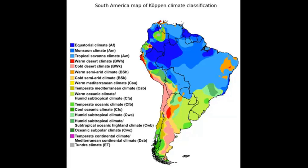Tying everything together, we can look at climate and connect it to the physical features and the physical landform regions we just discussed. So we have climate which is going to go from north to south, and we're going to see there's a lot of variation in terms of the climate in South America.